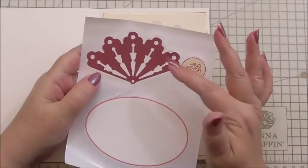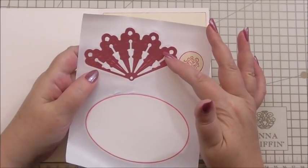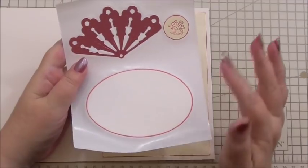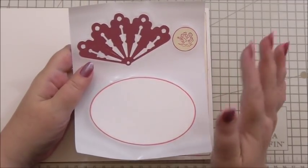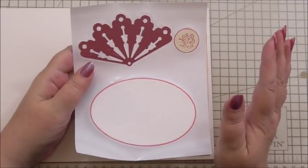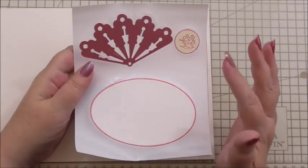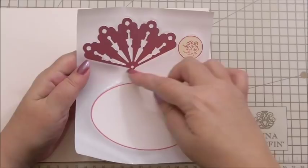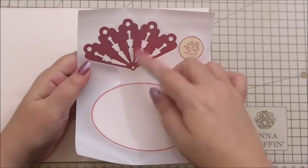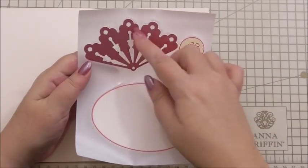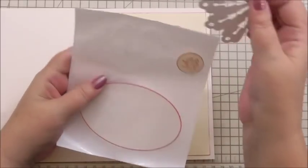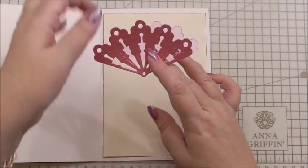After taking it through, it hasn't changed the embossing on the actual fan. It's not touched the heat embossing. It won't damage anything. You can take photos through, you can take embossed pieces through. It will just put adhesive on the back. You break the seal of the carrier sheet by just running a bone folder or something smooth around the edge so you can peel off your item and the adhesive will stay on the back.